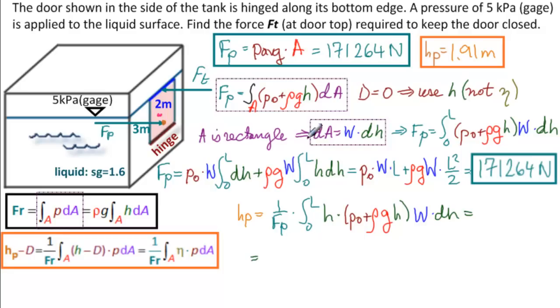It's the same integral as above except there's an extra H here, so we would have one over Fp. We have P0W L squared over two plus rho G W L cubed over three. Substituting all of our values here, we get 1.91 meters again.